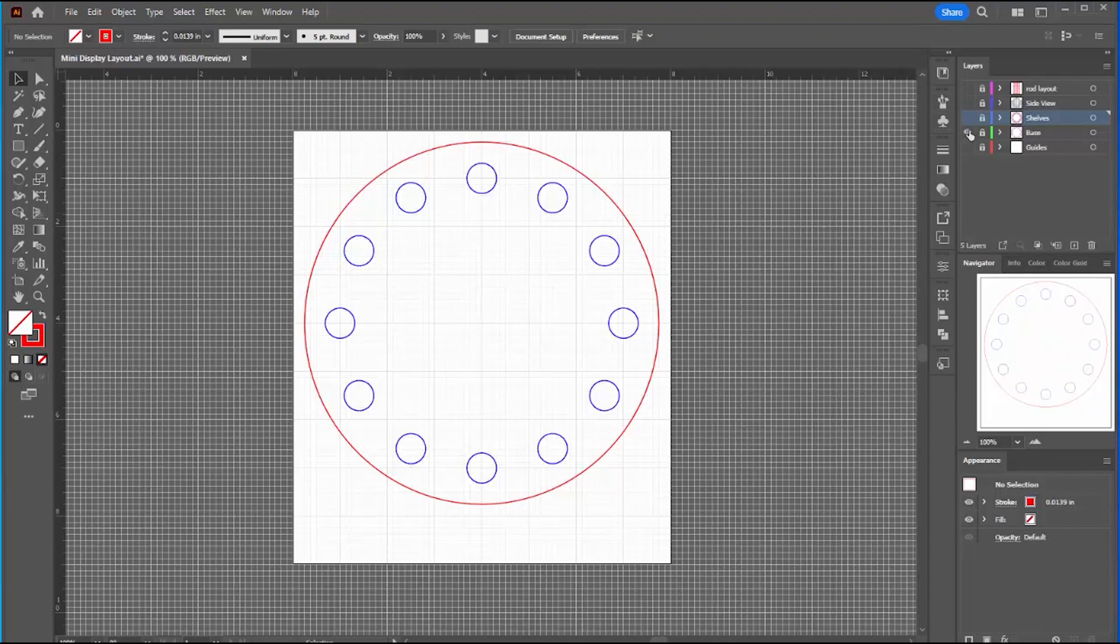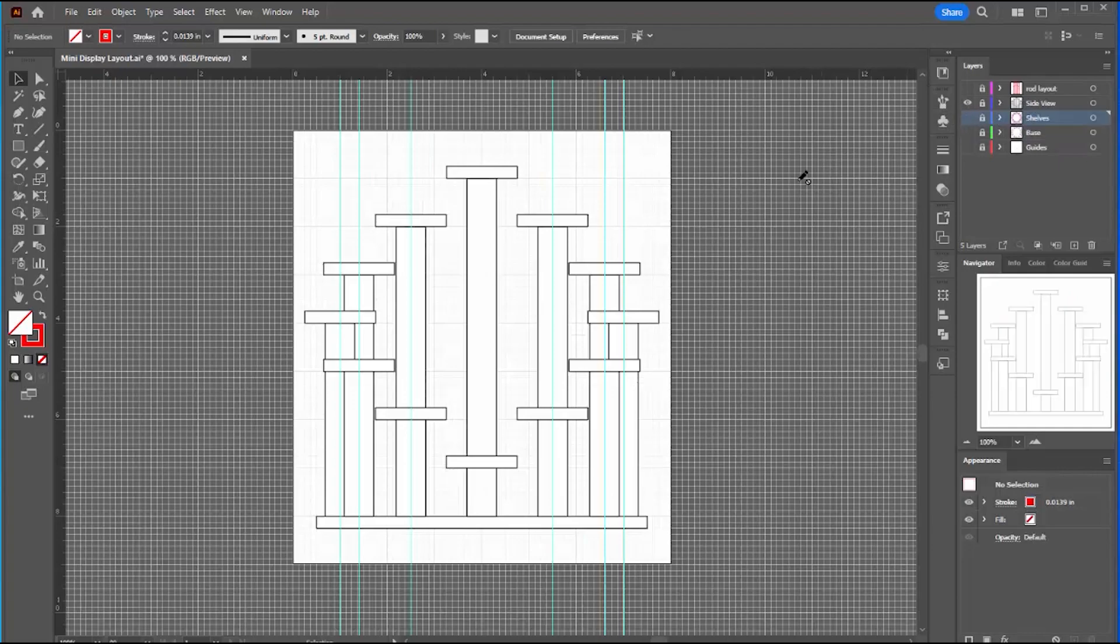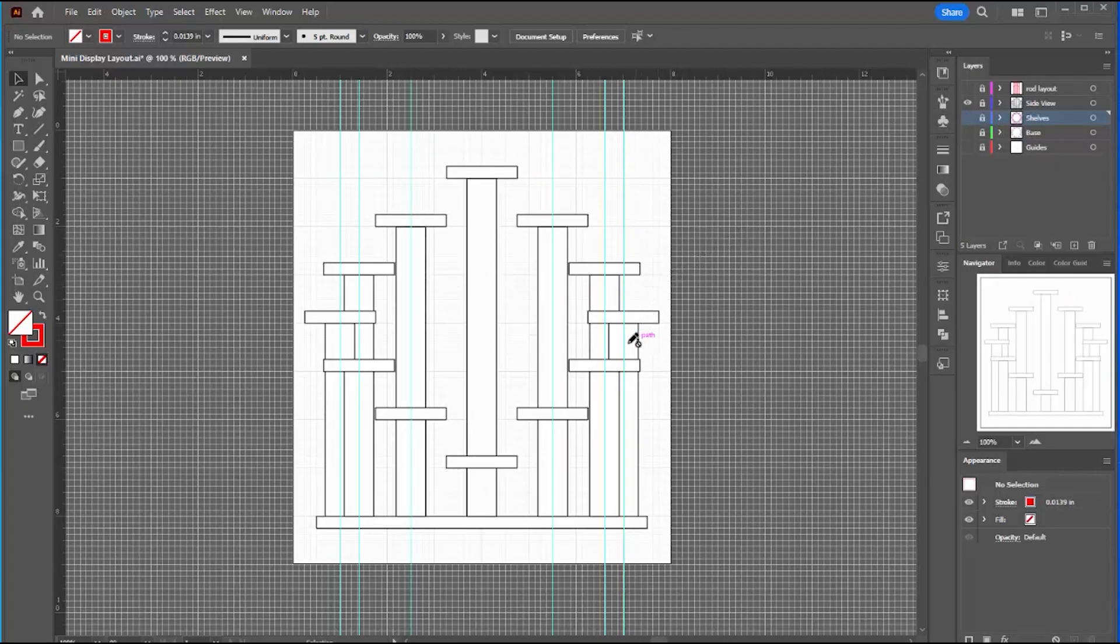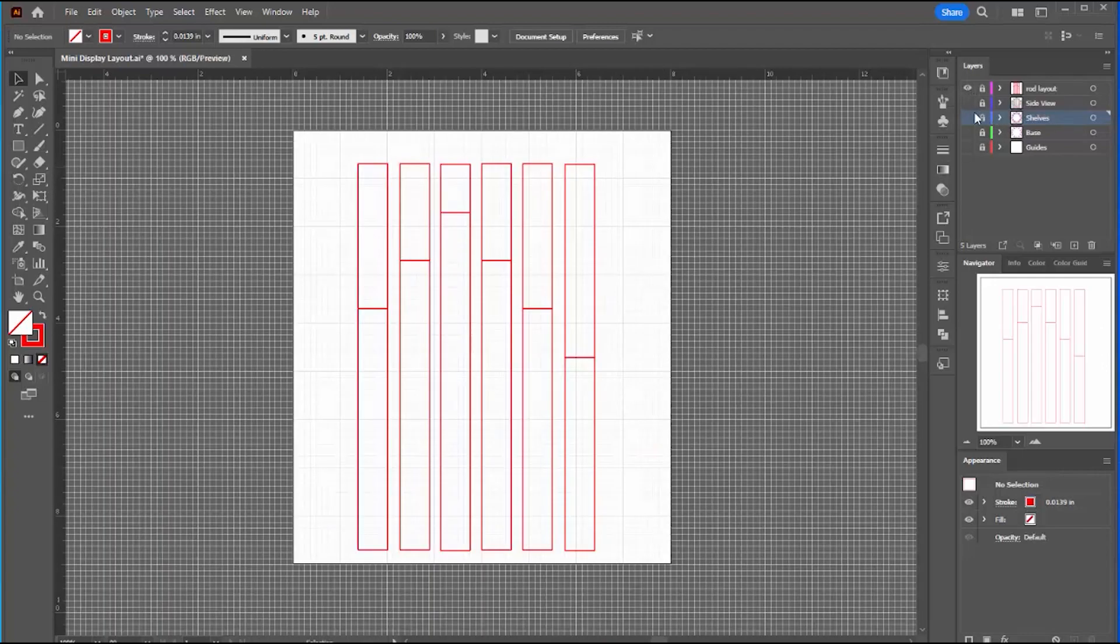I'm engraving both these shelves and the base with circles to show where to put the pillars. I also did a layout of the side view so I could figure out the right heights for each of the pillars. So they range from one inch up to seven inches.